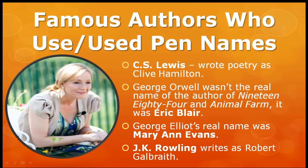We're following in some very good footsteps. Lots of authors have used pen names. Notably, C.S. Lewis wrote poetry as Clive Hamilton when he was a professor at Oxford. George Orwell is a famous one — he was actually Eric Blair. George Eliot was Mary Ann Evans, and because she was a woman and women didn't write books successfully in those days, she used a male name. J.K. Rowling has been exposed as Robert Galbraith because she wanted to step out from under the success of the Harry Potter novels and just see if she could do it under another name. And she really has.